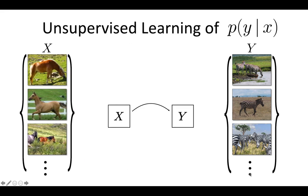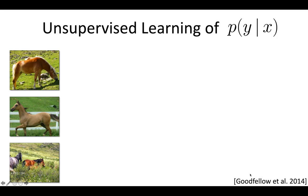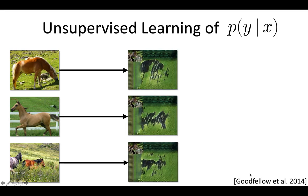Given an input horse, all we know is that the output should look like a zebra. We can use a GAN loss on the output and check if the generated image is a real zebra or a fake zebra. Unfortunately, the GAN loss alone did not work at all — the results suffer from artifacts, and the network tends to ignore the input and keep generating roughly the same output.